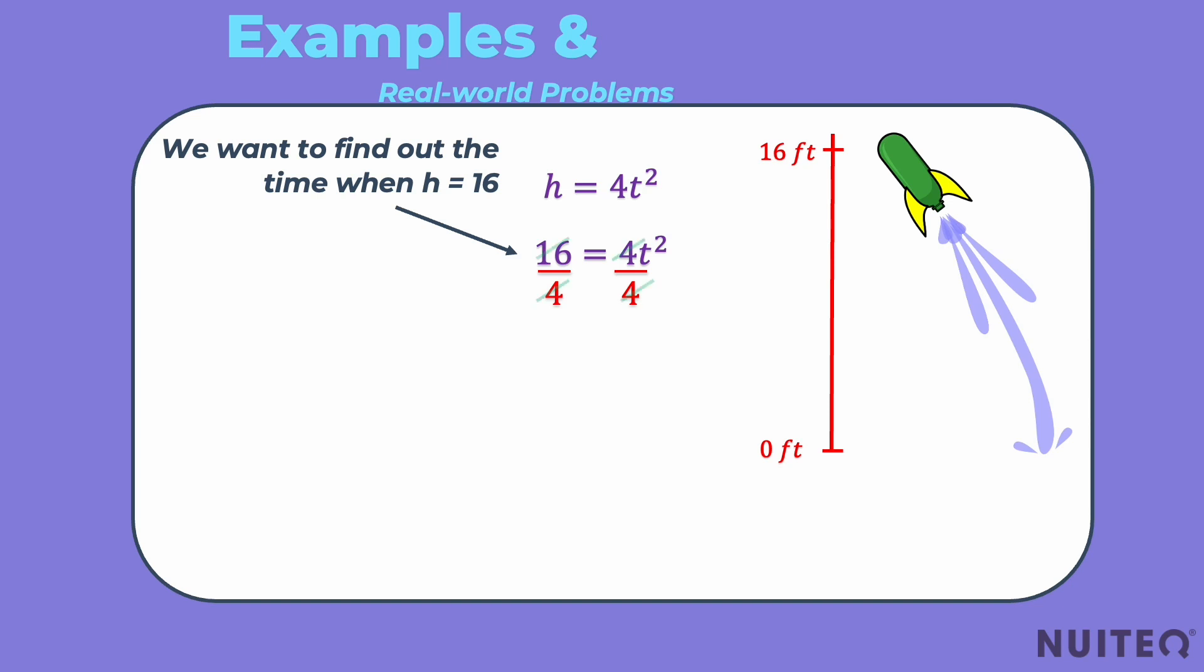Solving this equation gives us t equals square root of 4 is equal to 2 seconds. This means our rocket will reach 16 feet in 2 seconds.